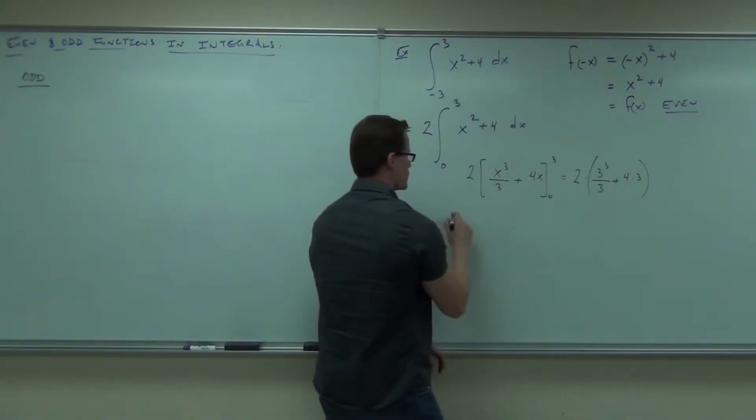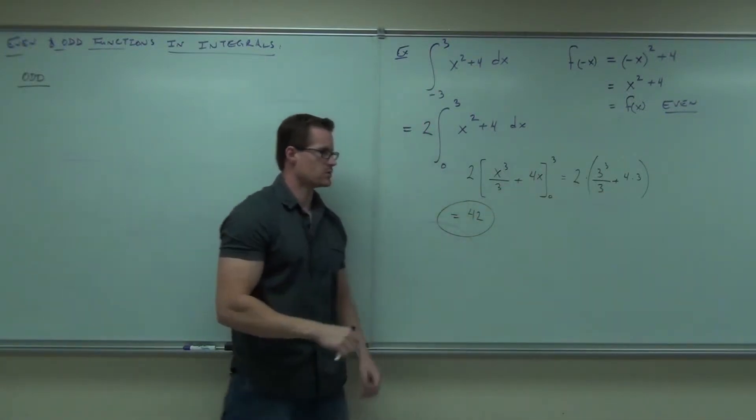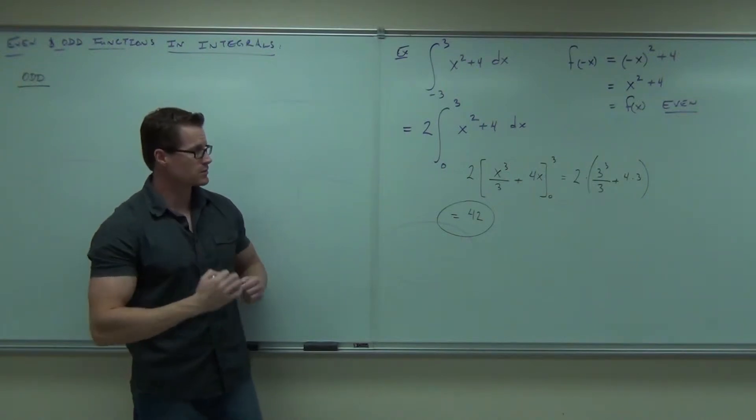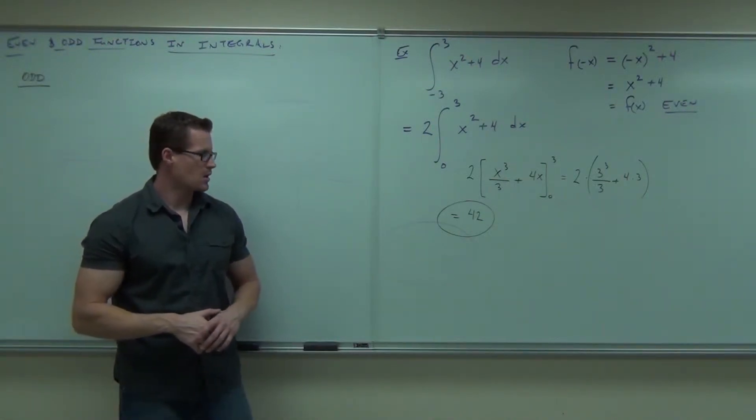Make sure you have parentheses there if you're going to do it. Okay, 9 plus 12 times 2, 21 times 2, 42? 42. Do that, 42. Yes, I think it is. 3 cubed over 3 is 3 squared, 3 squared is 9. 9 plus 12 is 21, 21 times 2 is 42.